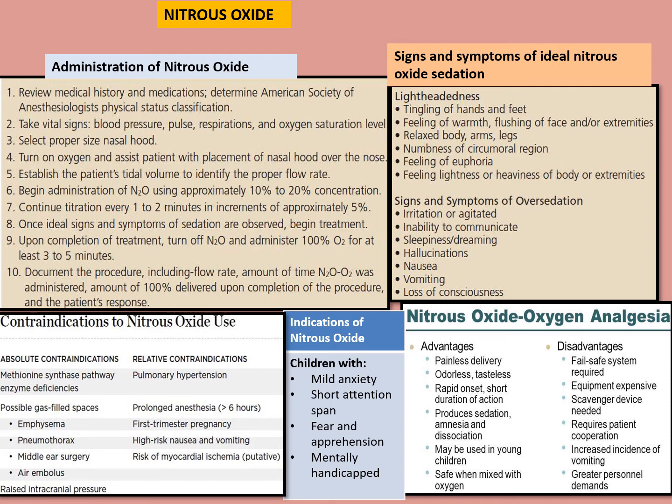Absolute contraindications where you cannot give nitrous at all include MSMR, pneumothorax, and air embolus. Advantages include painless delivery, odorless, tasteless, rapid onset, usable in young children, and produces sedation and amnesia. A fail-safe mechanism is always required so that you don't give more than 80% nitrous or less than 20% oxygen. Patient cooperation is required. In adults, we go as high as 80:20, but usually use a dose of 60:40 or 70:30 — maximum 80:20.